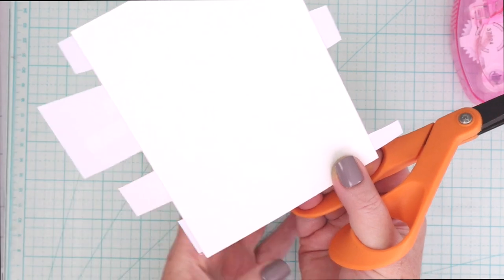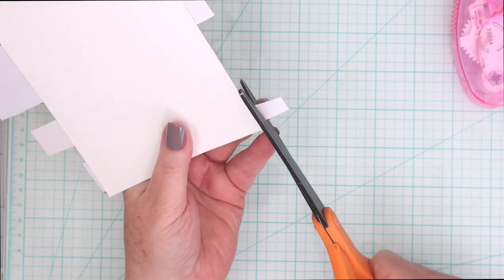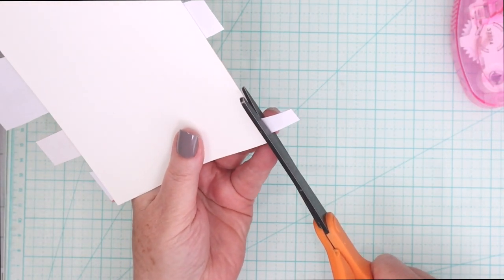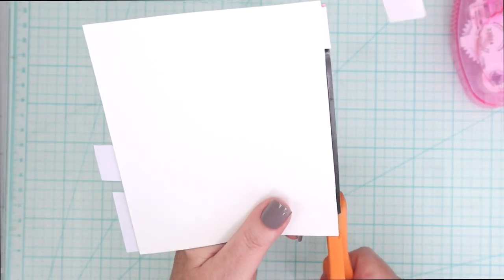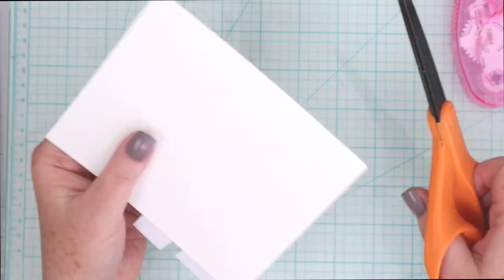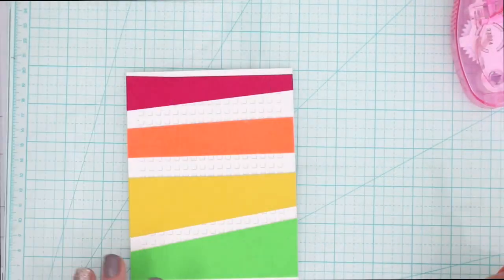Tape runner or liquid glue will work just fine. Once that's done, I'm going to flip the whole thing over and just use some nonstick scissors to cut off the excess. And that is just a really easy way to use the Flock Sheets to create a textured and colorful panel.